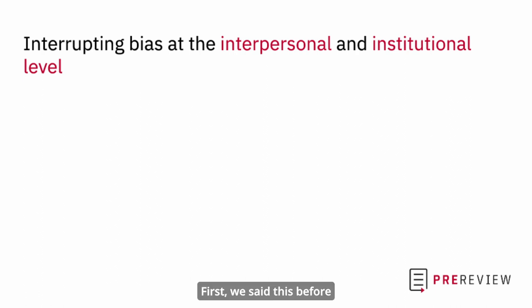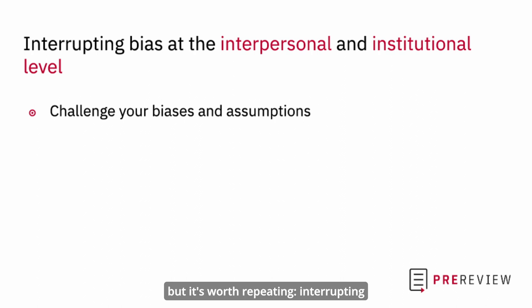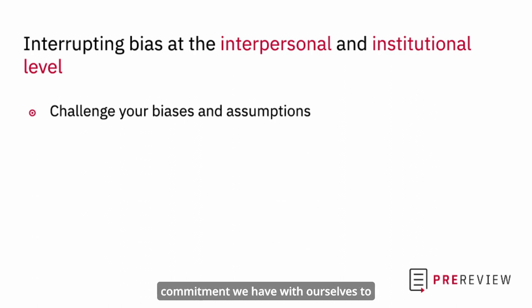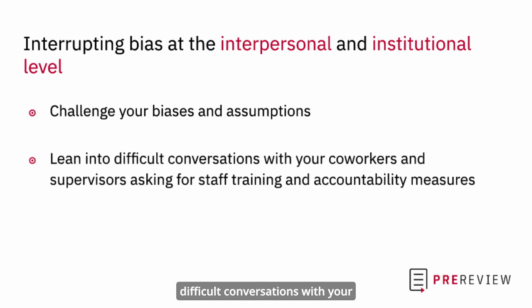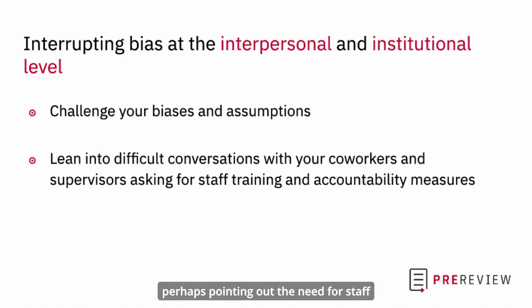First, we've said this before but it's worth repeating: interrupting bias and oppression at any level always starts with the commitment we have with ourselves to challenge our own biases and assumptions. This self-reflection can better equip you to initiate difficult conversations with your co-workers and supervisors, perhaps pointing out the need for staff training and more transparent anti-oppression accountability measures.